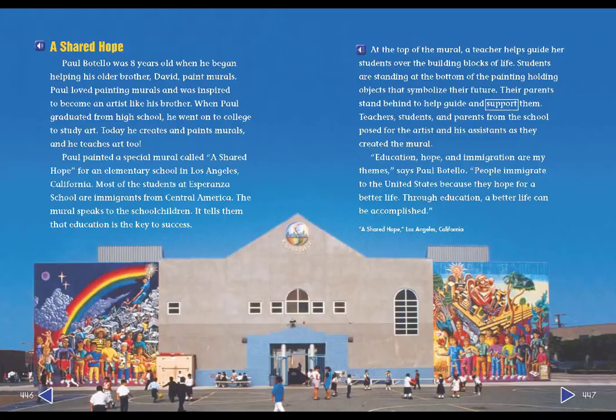Most of the students at Esperanza School are immigrants from Central America. The mural speaks to the school children — it tells them that education is the key to success. At the top of the mural, a teacher helps guide her students over the building blocks of life. Students are standing at the bottom of the painting, holding objects that symbolize their future. Their parents stand behind to help guide and support them. Teachers, students, and parents from the school posed for the artist and his assistants as they created the mural.